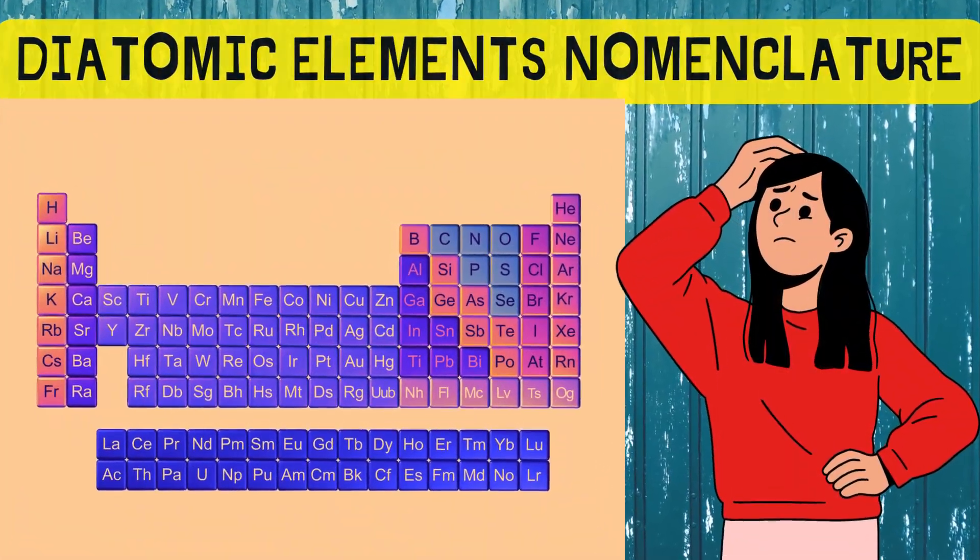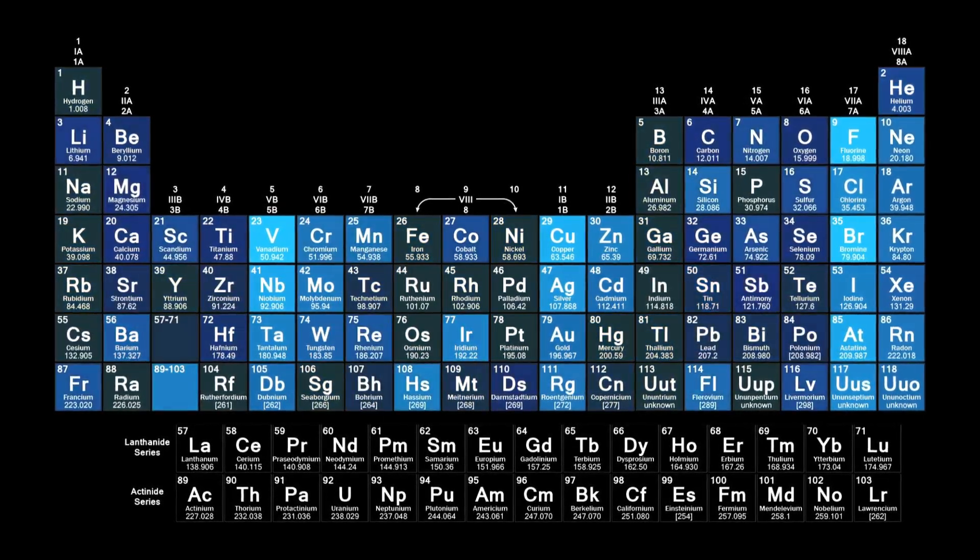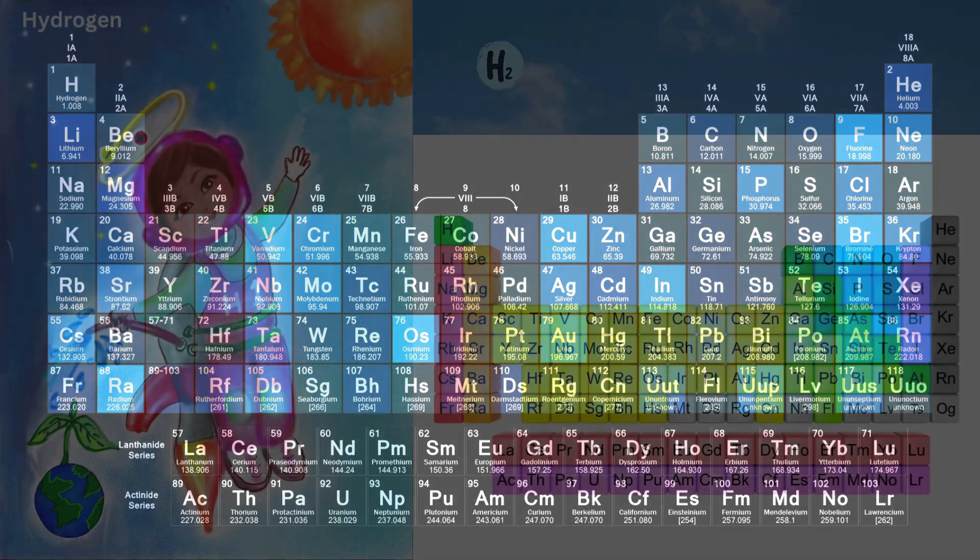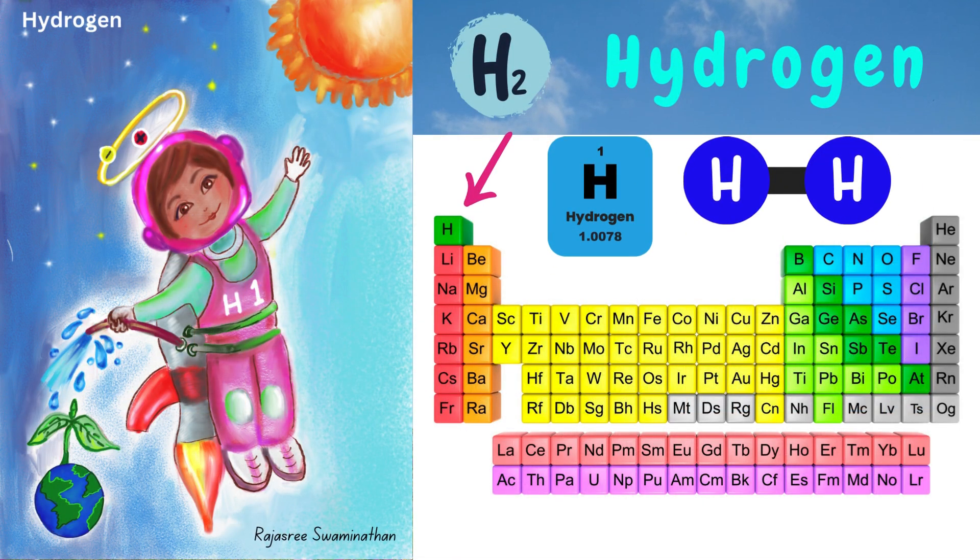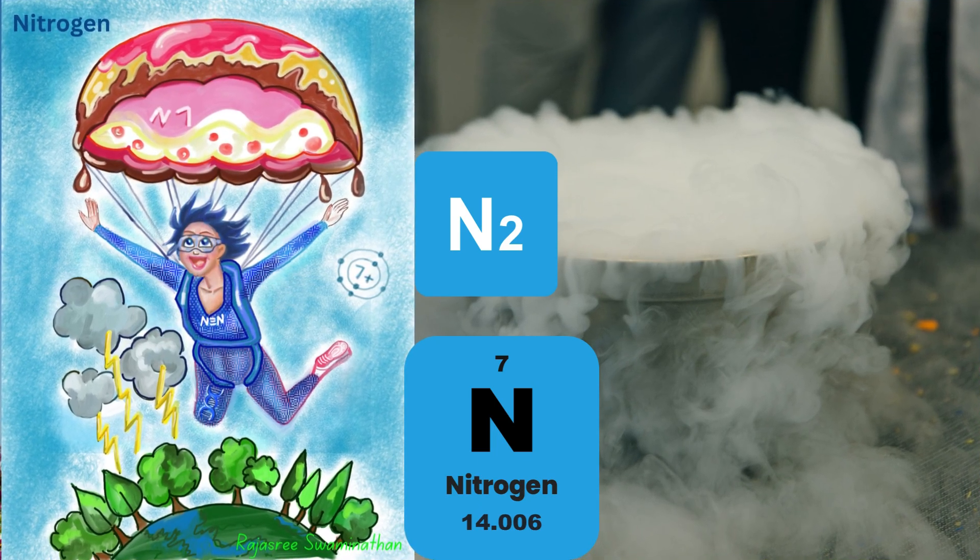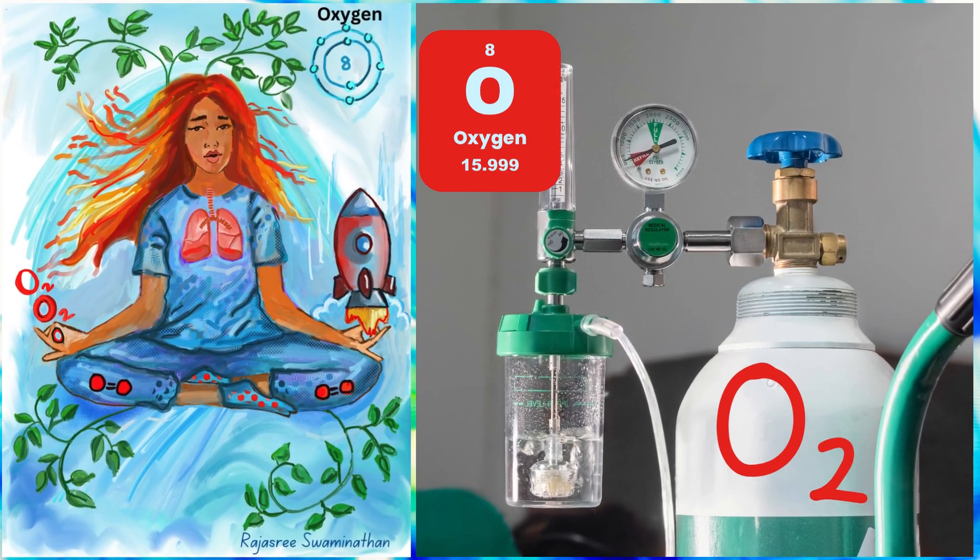Diatomic elements nomenclature. On the periodic table, the diatomic elements are represented by their element symbols with no subscripts. However, hydrogen in the air and liquid hydrogen both exist as H2 molecules. Nitrogen in the air and liquid nitrogen are both N2 molecules. Same for oxygen in the air and liquid oxygen.